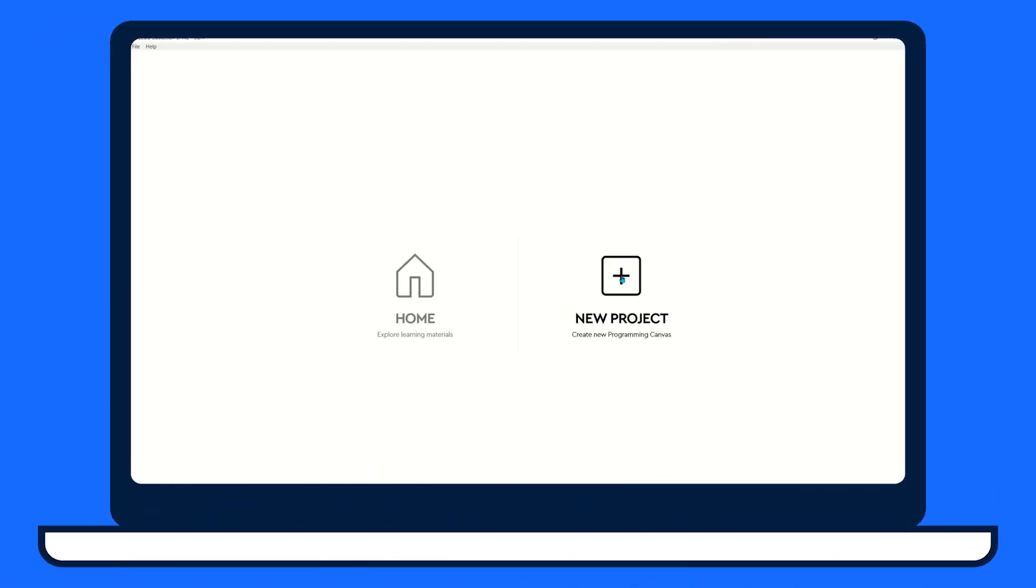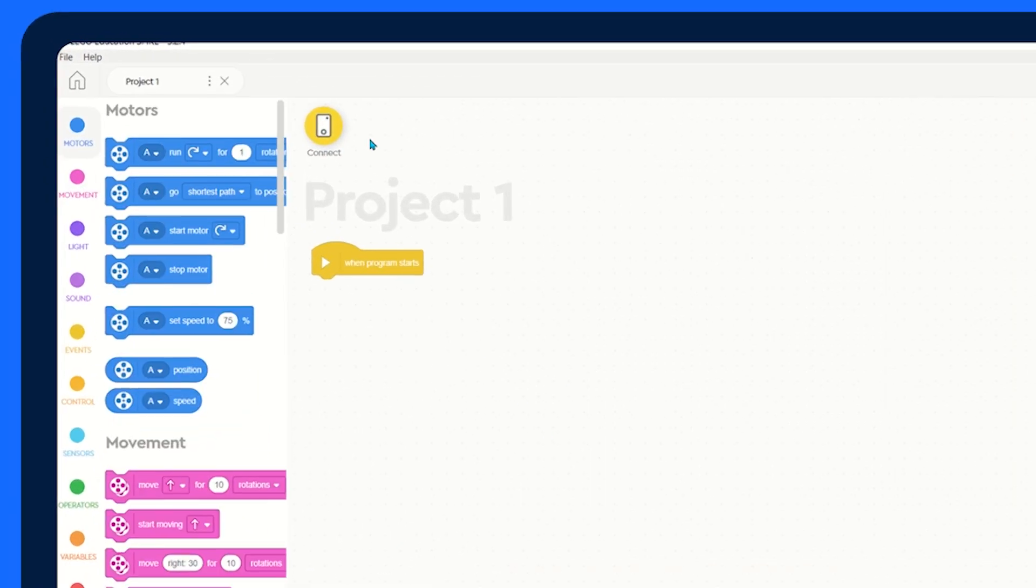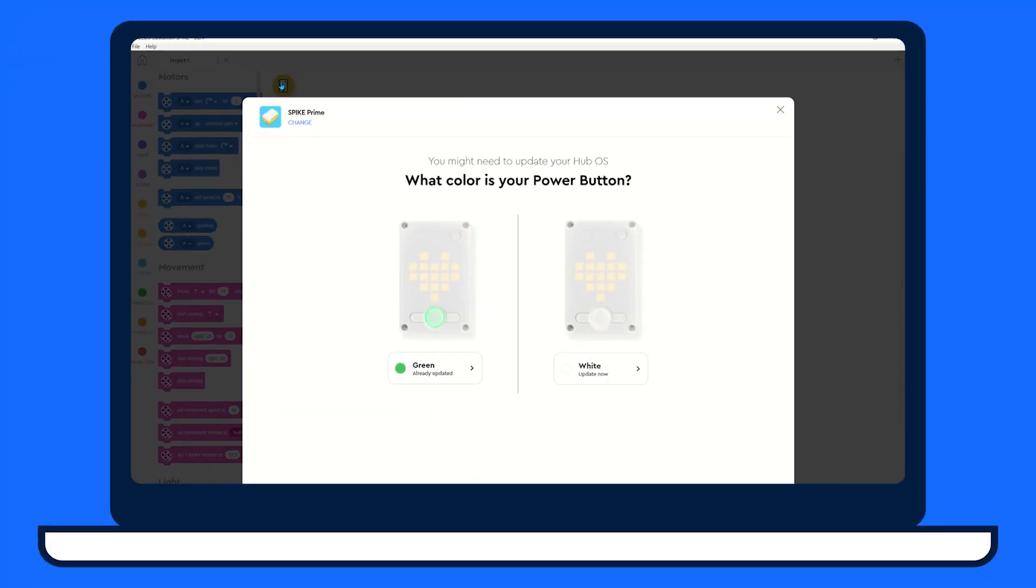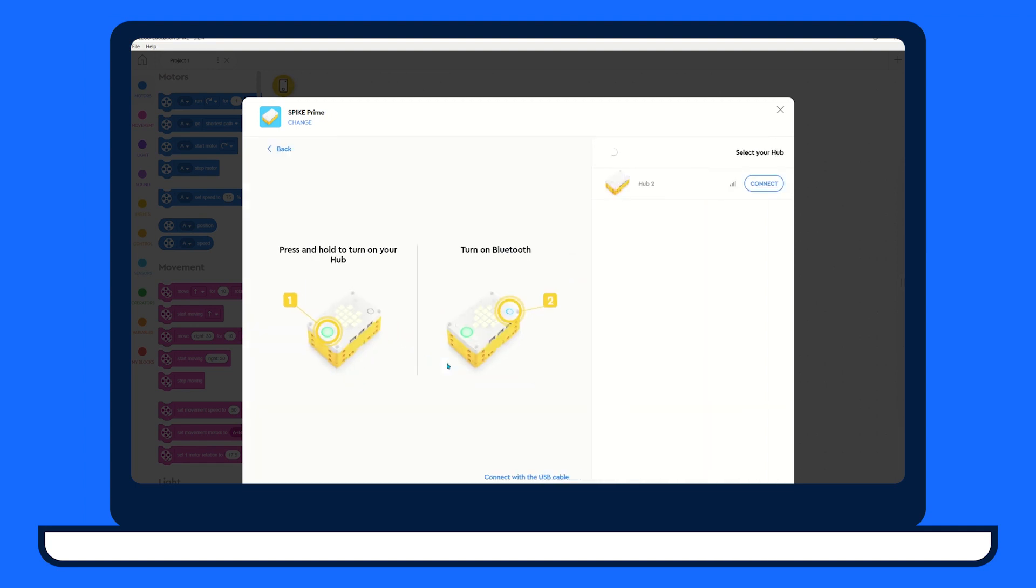Once you have opened the Spike Prime function in the app, you will land on the home page. You can commence a new project or follow one of the many tutorials. To connect your hub within a project, click the connect hub icon towards the top ribbon of your window. You'll be directed to connect your hub.